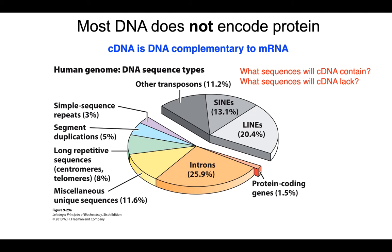The important thing to remember is that when we look at the human genome, the vast majority of sequences are these repeat sequences that don't encode protein. If we just look at the protein-encoding regions of the genome, it only accounts for about 1.5% of the genome. And oftentimes, that's what we're most interested in as molecular biologists — a gene that encodes a specific protein.